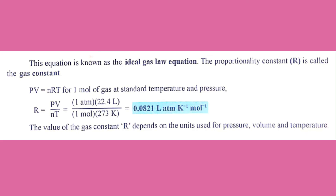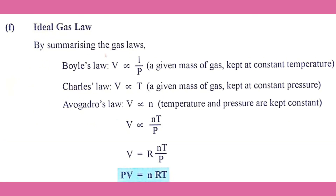The ideal gas law: 1 mole at standard temperature is 273 K. The value of the gas constant R depends on the units used for pressure, volume, and temperature. The gas constant R depends on the pressure unit, volume unit, and temperature unit, and the equation used.